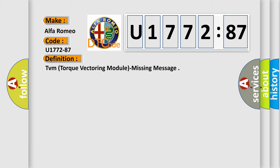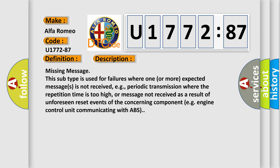And now this is a short description of this DTC code. Missing message. This subtype is used for failures where one or more expected messages is not received, e.g. periodic transmission where the repetition time is too high, or message not received as a result of unforeseen reset events of the concerning component, e.g. engine control unit communicating with ABS.